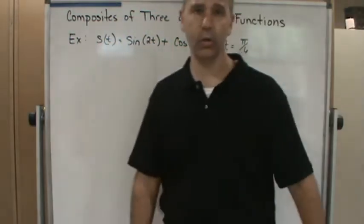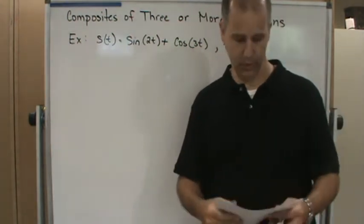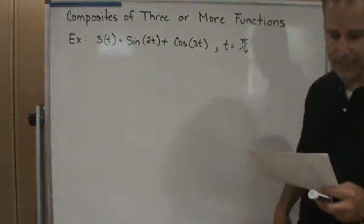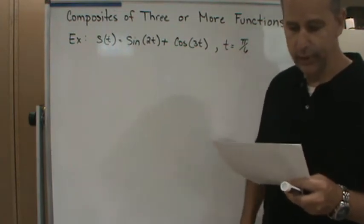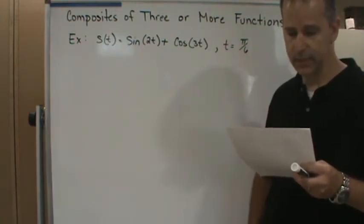Okay, welcome back. Now we're going to do another example, this one dealing with velocity. A particle moves along a coordinate axis. Its position at time t is given by the position function s(t) = sin(2t) + cos(3t).